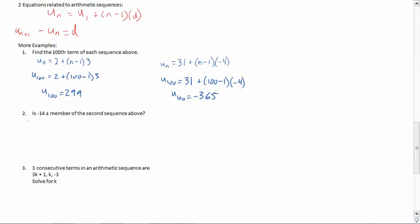Is negative 14 a member of the second sequence? Okay, so here's the sequence right here. It's asking if negative 14 is one of the numbers. So how do we check that out? Well, you put negative 14 in for uₙ because uₙ is the specific term. So we'll say negative 14. And if negative 14 is really a member of this sequence, then I can solve for n and I can find out which number it is in the sequence.